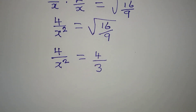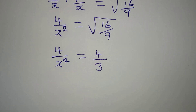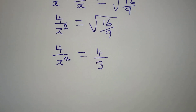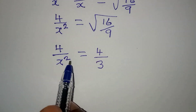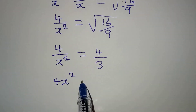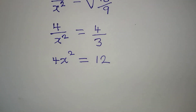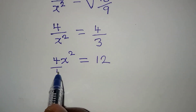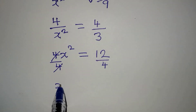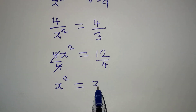Now let's continue solving. Let's cross multiply to get the value of x, so we have 4 times x squared, which will be equal to 4 times 3, that will give 12. So from here, we divide by 4 and divide by 4, and x squared will now be equal to 12 over 4, which is 3.